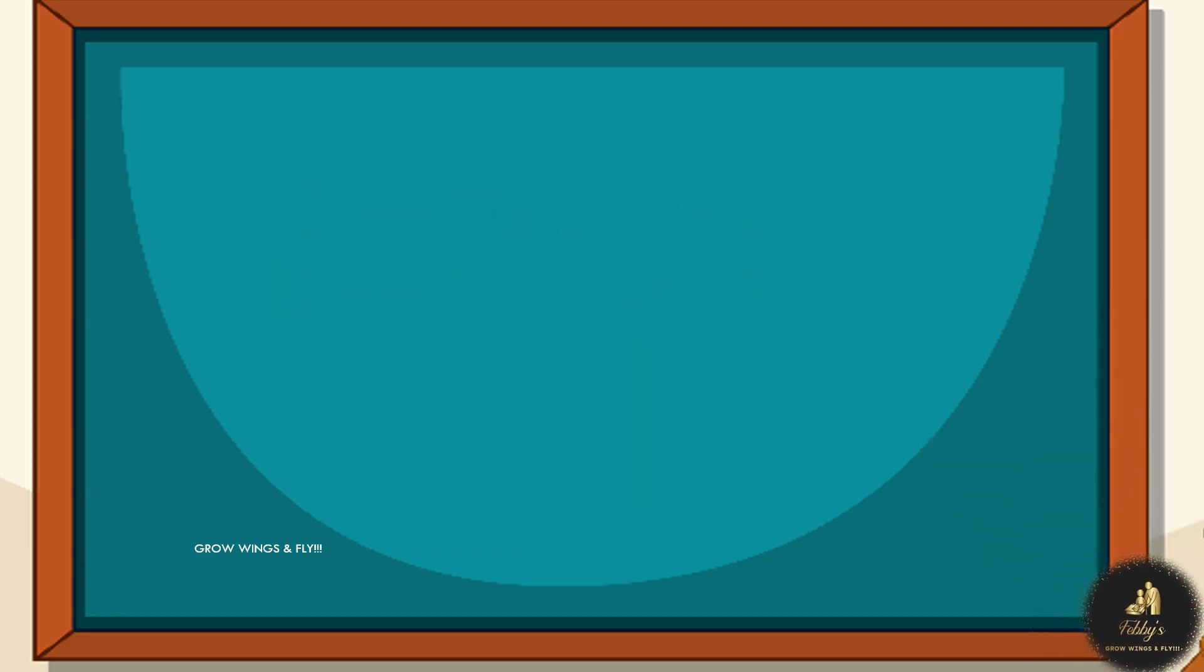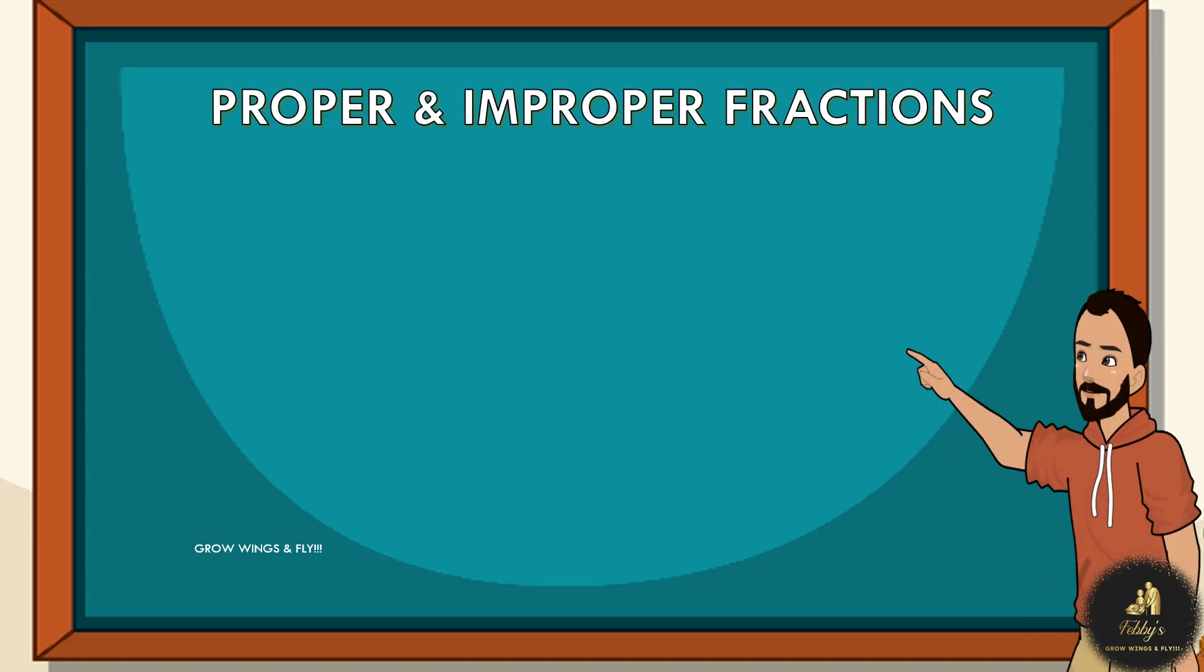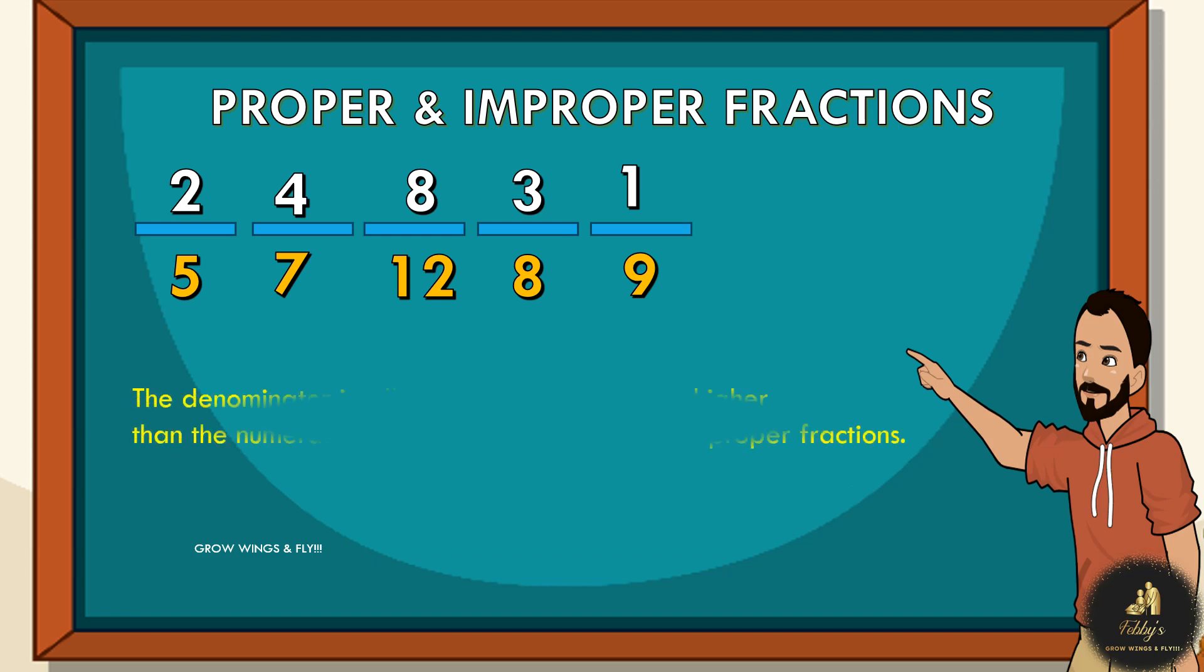Now, let's have a look. In order to understand what are proper and improper fractions, we would like you to have a look at these fractions. What are common in these? Did you guess it? Let me help you with that. These fractions, the denominators are higher than the numerator. Such fractions are called proper fractions.